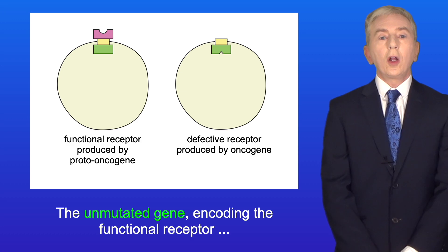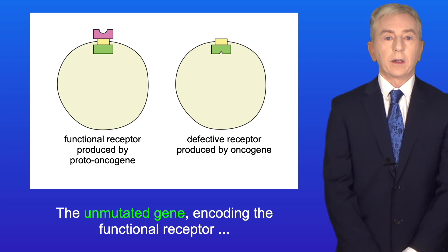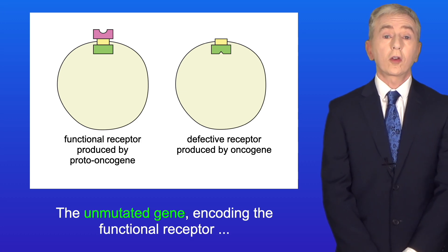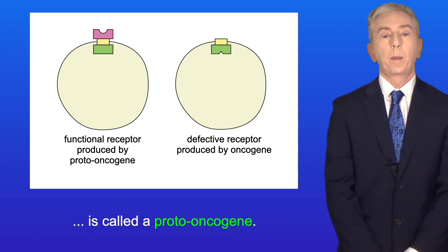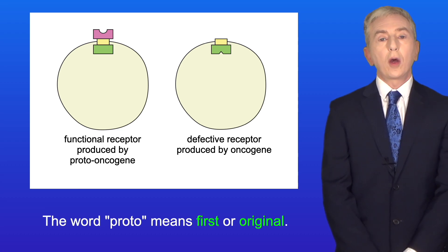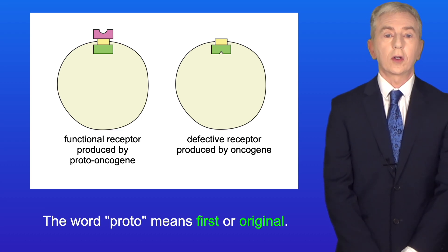The unmutated gene encoding the functional receptor is called a proto-oncogene. The word proto means first or original.